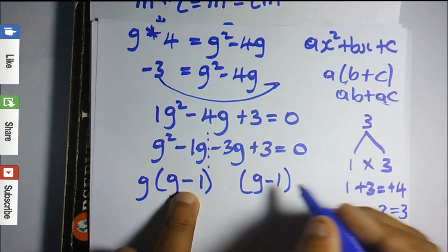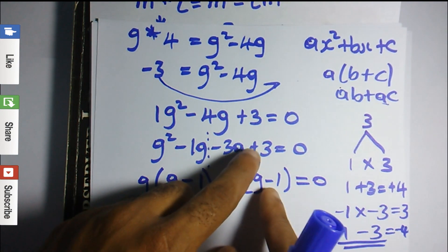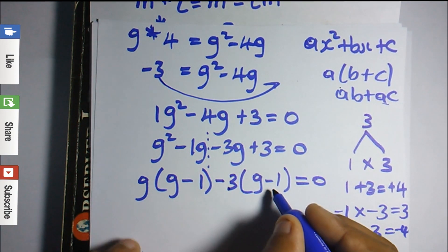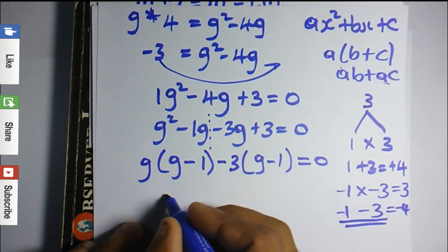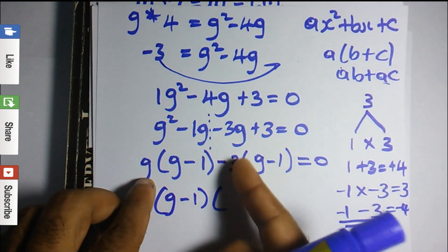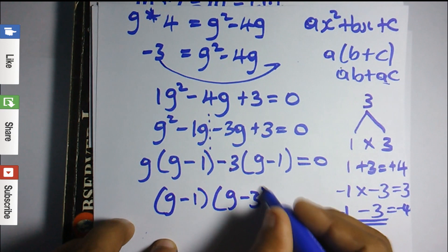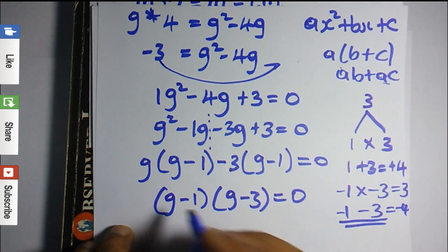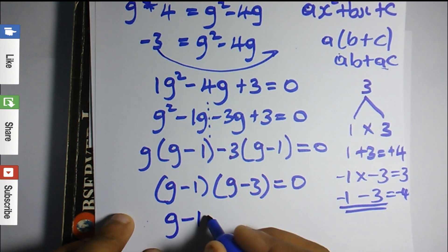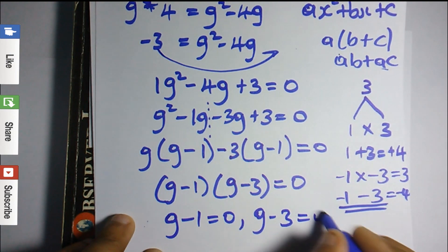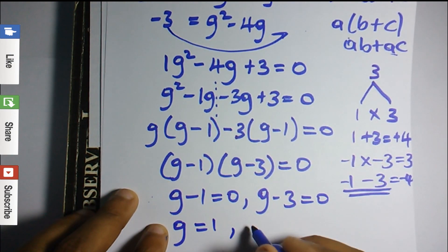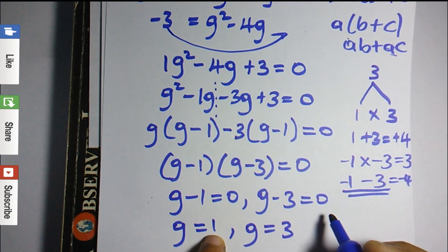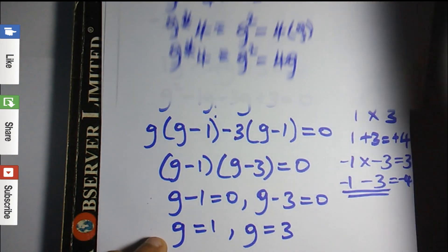We now have g minus 1 appearing twice, so we write (g minus 1) as a common factor. The remaining outside terms give (g minus 3), so we have (g minus 1)(g minus 3) equals zero. Setting each binomial to zero: g minus 1 equals zero gives g equals 1, and g minus 3 equals zero gives g equals 3. We now need to check which values satisfy the original binary operation.